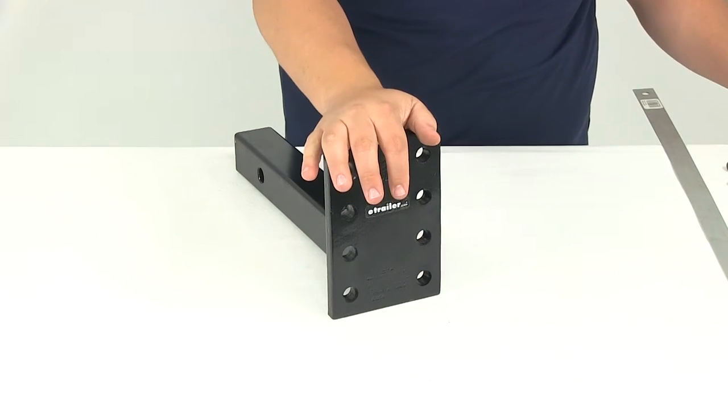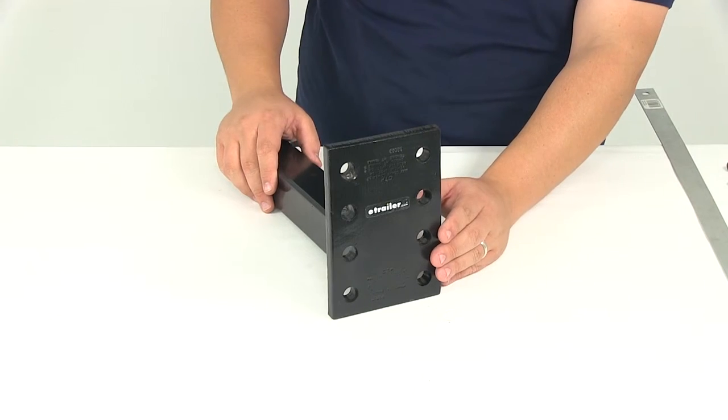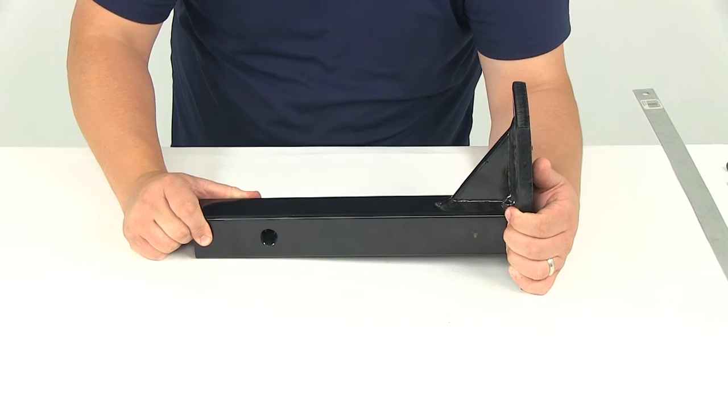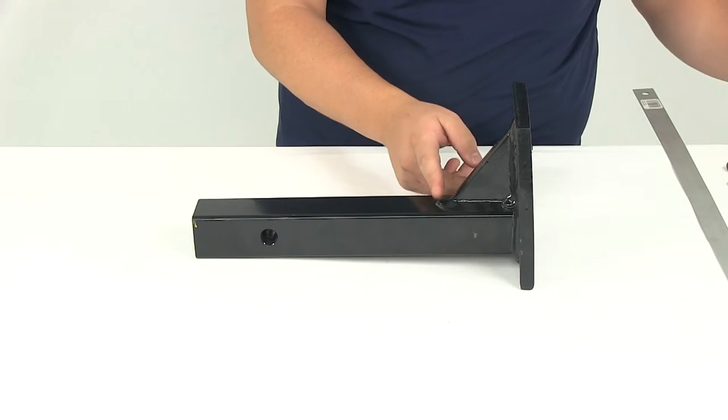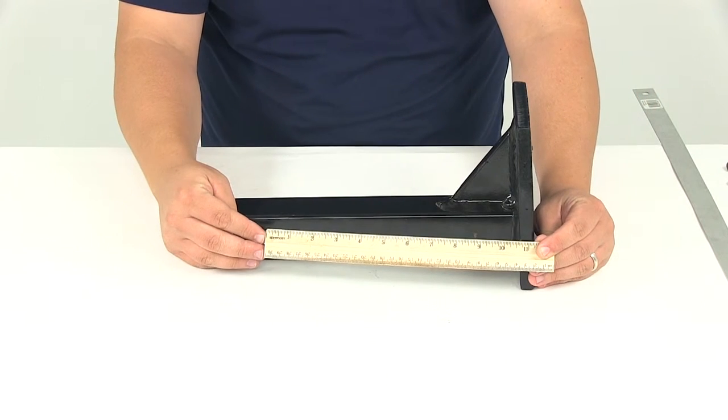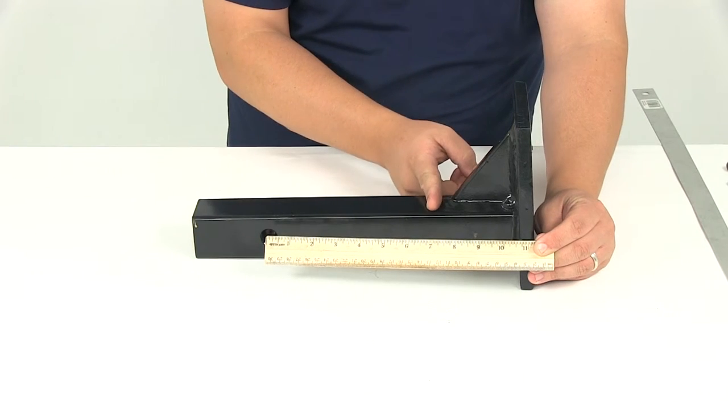You're going to have four sets of holes. The hole diameters are going to measure 17/32nds of an inch. Another measurement real quick is from the center of the hitch pin hole to the back of the brace, and I'm going to measure to the bottom of the weld. That measurement is going to give us about seven inches to this point here.